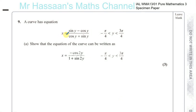Now for the final question from the specimen paper for the P3 International A-level exam. Question number 9 says a curve has equation x equals sine y minus cosine y over cosine y plus sine y, and y is between minus pi over 4 and 3 pi over 4. Show that the equation of the curve can be written as x equals minus cosine 2y over 1 plus sine 2y. So you have to use some trig identities to transform this into this.